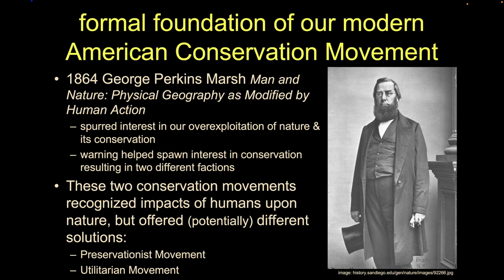The formal foundations of the modern conservation movement really get going in this era. Critically important is George Perkins Marsh, who wrote Man and Nature: Physical Geography as Modified by Human Action. Written for the learned class, it had a huge impact — everyone we'll hear about since then read this book. It really got people starting to think that maybe we're taking too many resources, maybe we're over-exploiting things, and that therefore we need to do something to stop sucking everything dry.